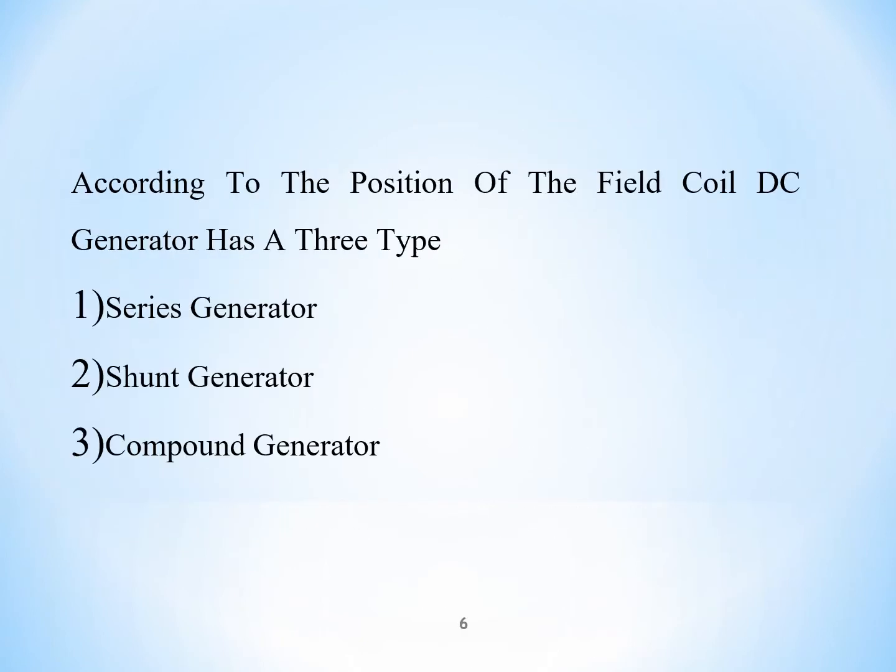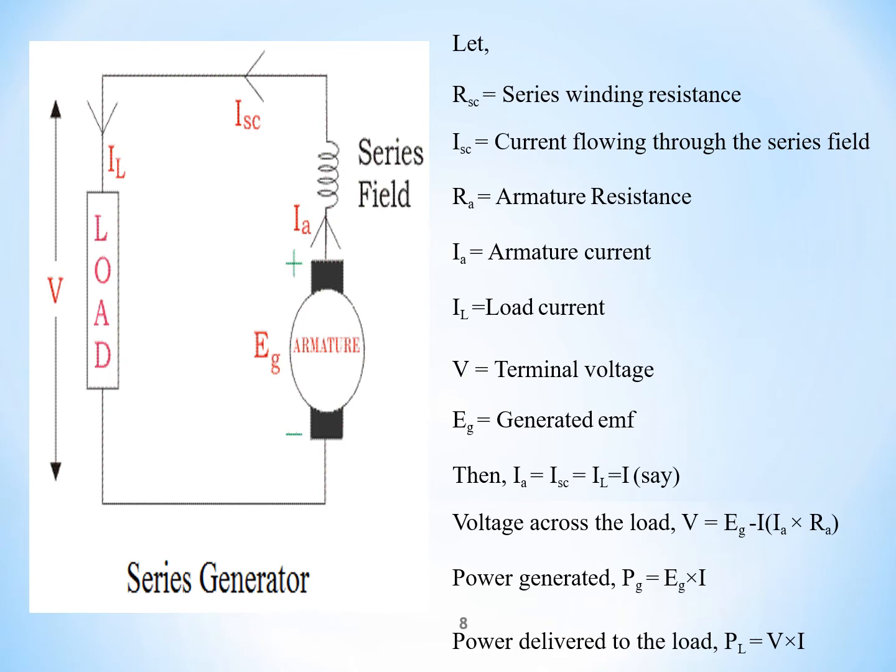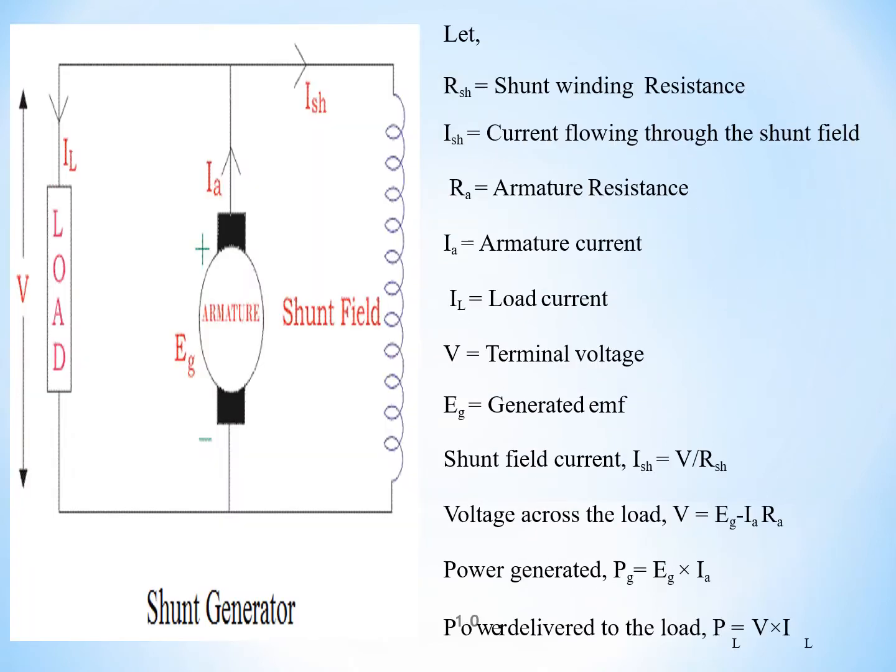if we take shunt type DC generator here, this self-excited means the current should be provided from the flux should be provided from this shunt field winding. But initially there will be no armature current in the armature. So here, how will the EG be developed?